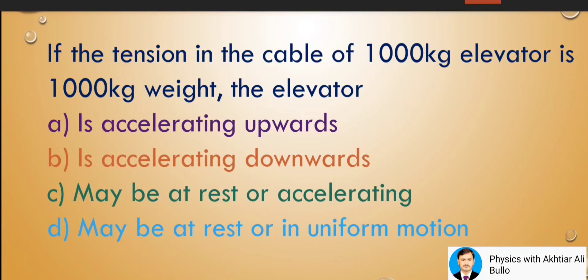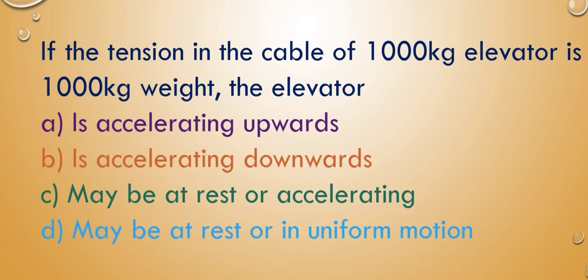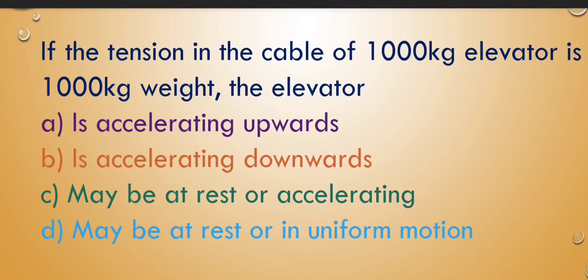Here, tension is equal to the weight. So the correct answer is D: the elevator may be at rest or in uniform motion. This means if the tension in the cable of a 1000 kg elevator is 1000 kg weight, the elevator may be at rest or in uniform motion.